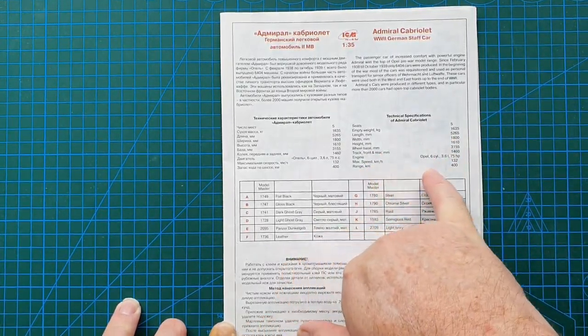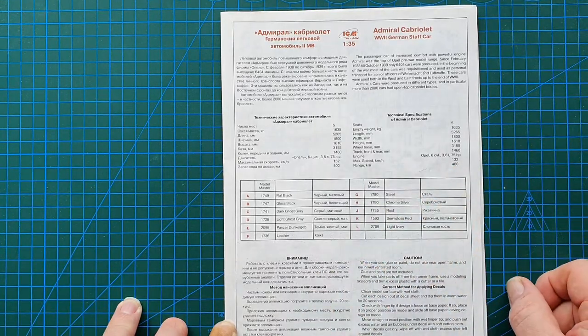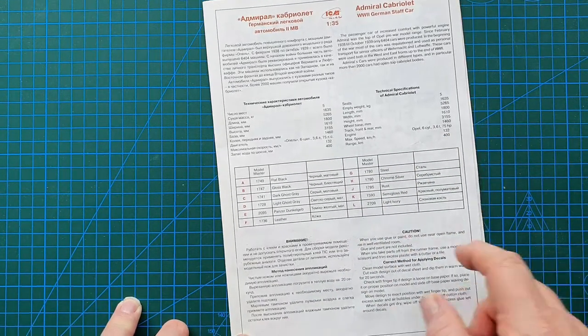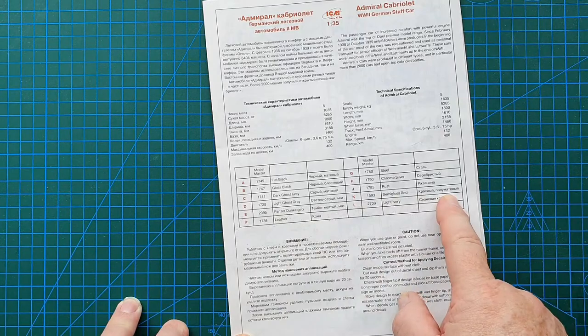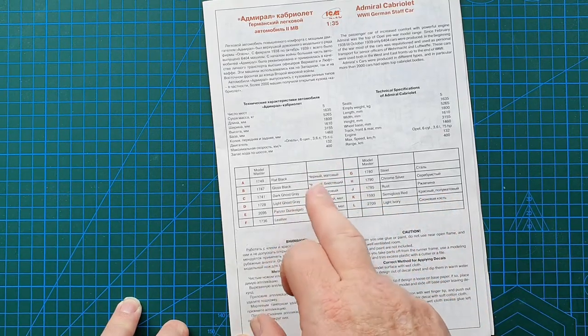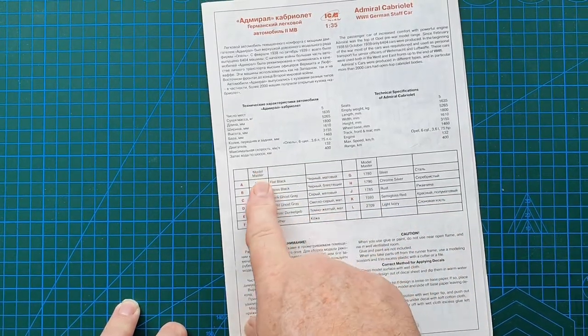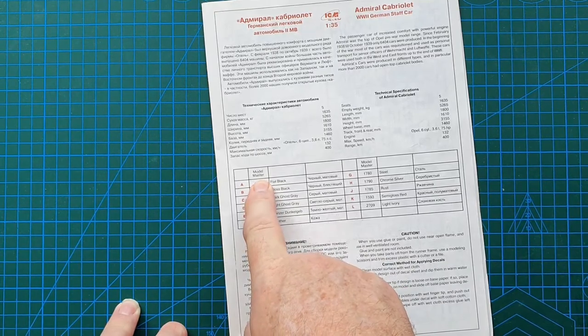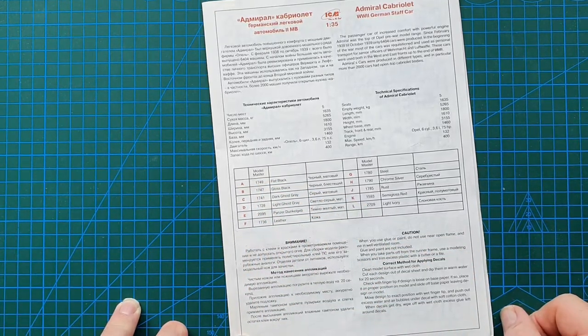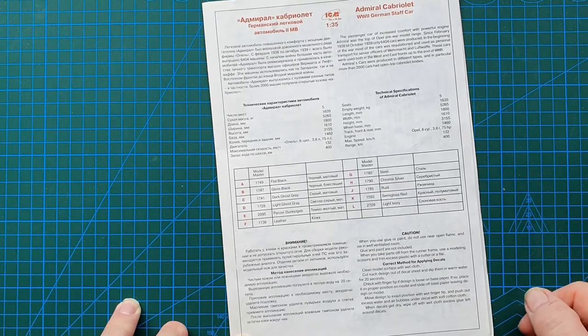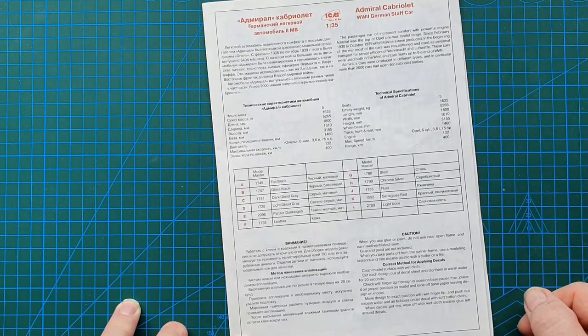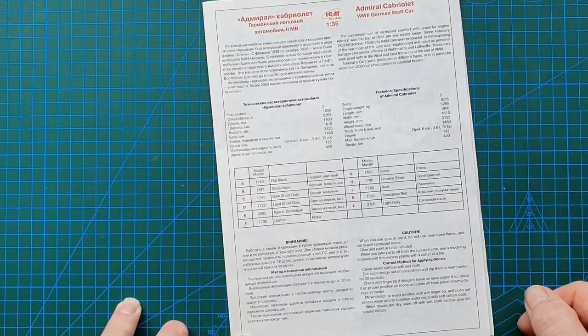Maximum speed, 132 kilometers an hour. That's not bad. Color call outs. Okay so English, Ukrainian. They only specify Model Master but it's a late 1930s German sedan.